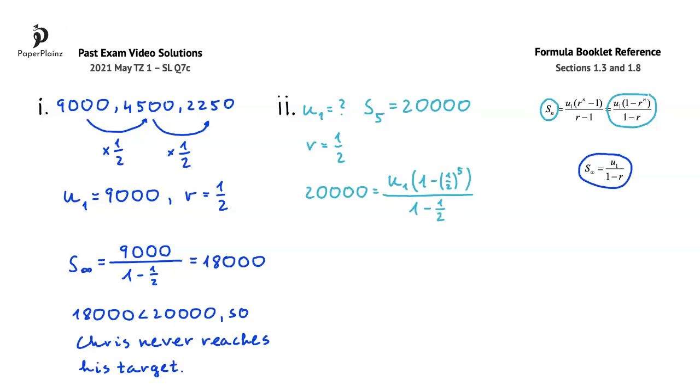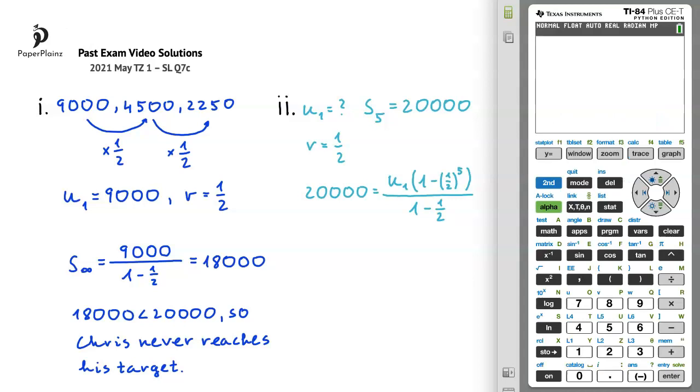Let's use our calculator to find u1. To do this, I will use the equation solver, so I will press math, the up arrow, and enter. On the left hand side we have 20,000, and on the right hand side I will start by entering a fraction, so pressing alpha, y, and enter.